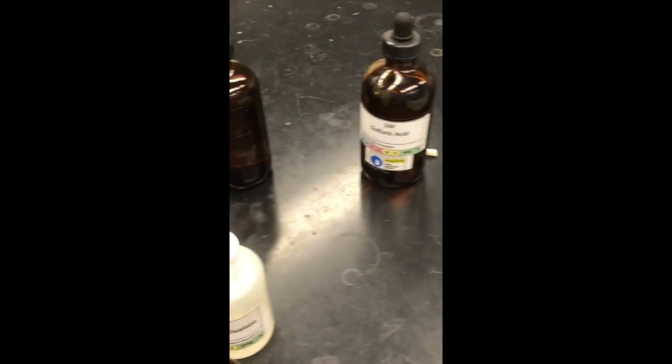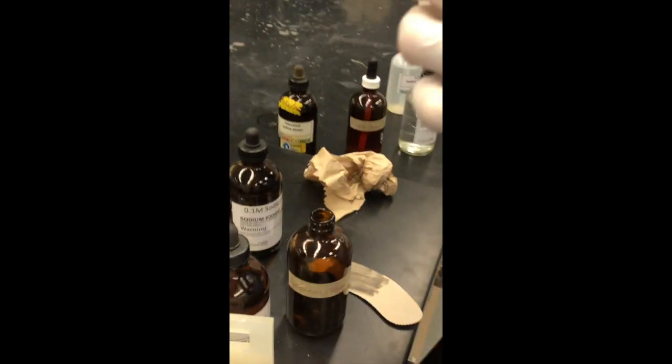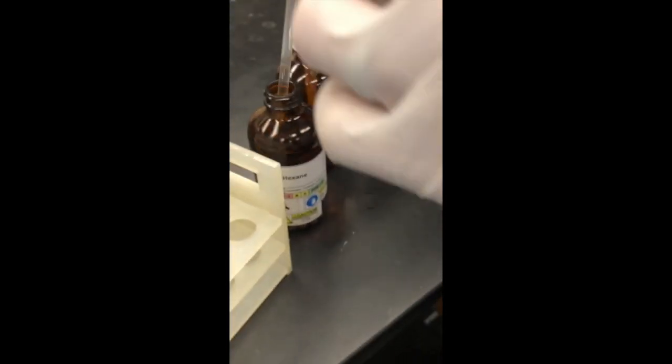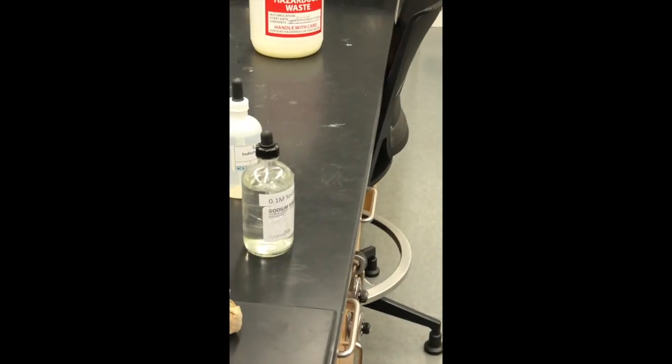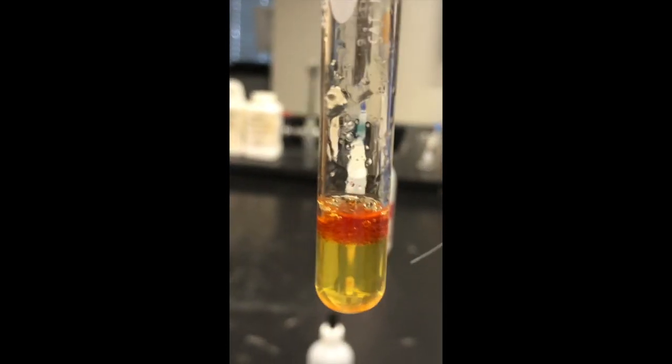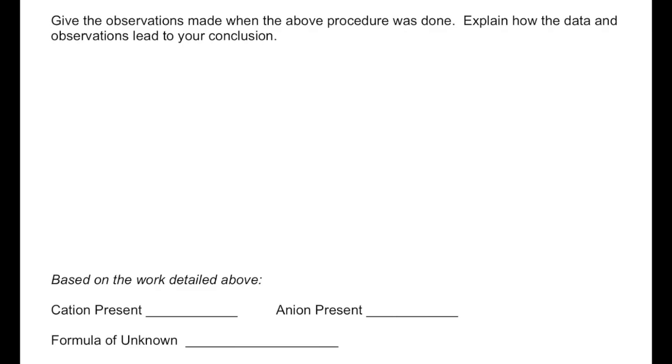Making our observations, we should now be able to identify the cation. Now for the anion: again we'll make up a solution of chlorine water with hexane, observe the color of the upper hexane layer, then add a few drops of our unknown to see if the upper layer changes color. Observing the color of the upper layer will tell us the identity of the anion. We will write our observations, make our conclusions, and we're finished. Thank you for watching.